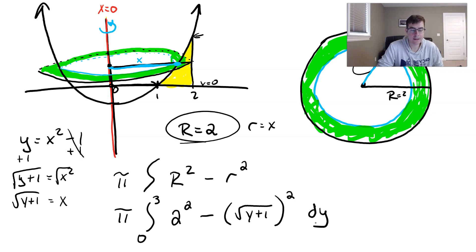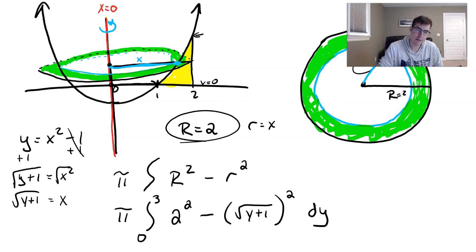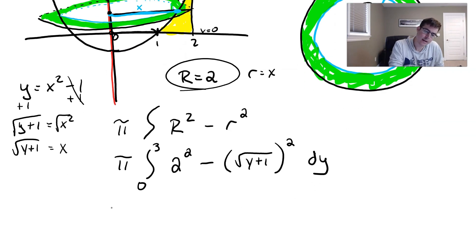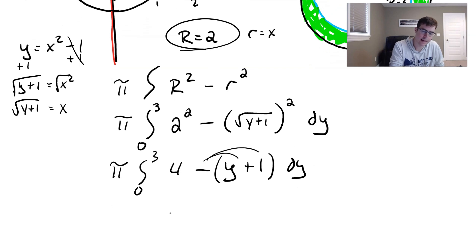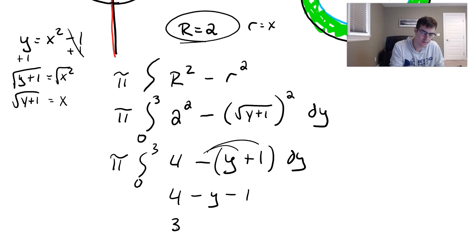And then we have our D Y. And now we can go ahead and solve this out and see what happens. So if I did this out here, we're getting pi. And then, you know, I'll keep this here, three. This is just four minus the square root squared just becomes Y plus one D Y. Distribute that negative sign through. We get four minus Y minus one, which is the same thing as three minus Y.